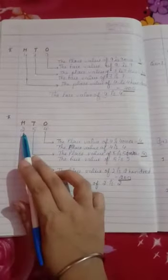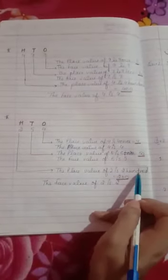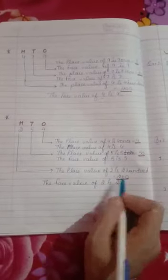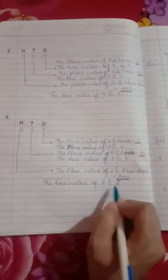2 is in the 100's place. The place value of 2 is 200. The face value of 2 is 2.